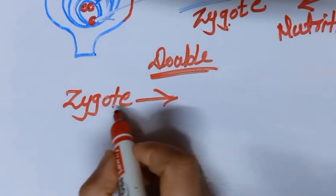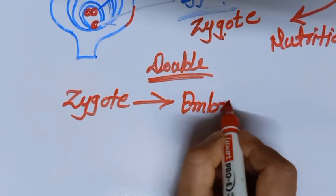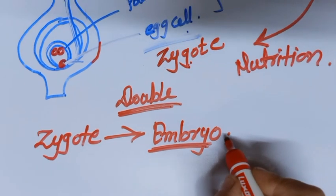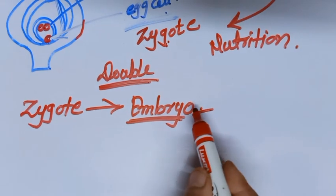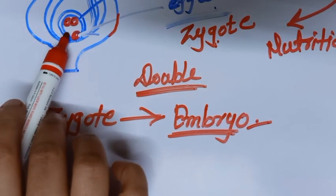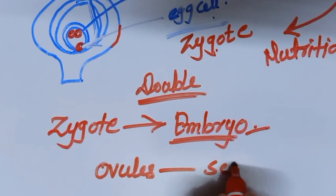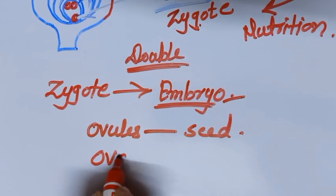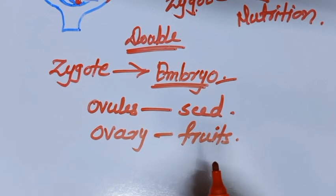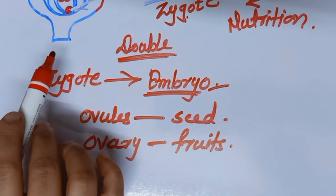After the formation of the zygote, the zygote divides mitotically many times and an embryo is produced. The embryo develops entirely inside the ovary, with the endosperm providing nutrition. The ovules present inside the ovary transform into seeds, and the entire ovary transforms into the fruit. When the fruit bursts or opens, the seeds get free from it. When these seeds fall on a suitable substrate, they start to germinate.